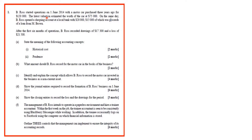B-Ross started operations on the 1st of June 2014 with a motor car purchased three years ago for $120,000. The latest valuation estimated the worth of the car at $75,000. On the same day, B-Ross opened a checking account at a local bank for $20,000, $15,000 of which were proceeds of a loan from M-Brom. After the first six months of operation, B-Ross recorded drawings of $17,300 and a loss of $21,500.